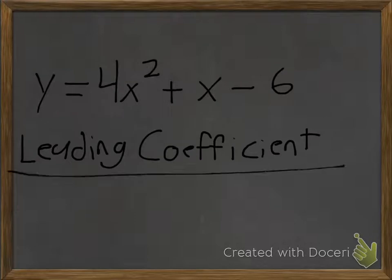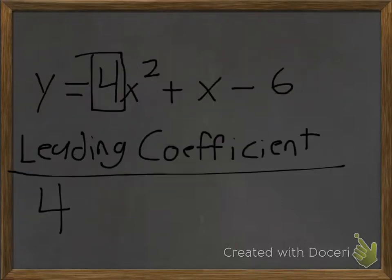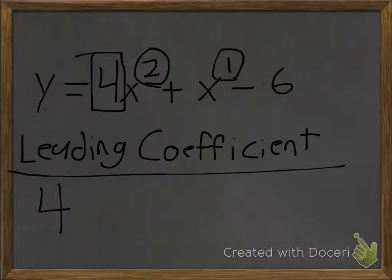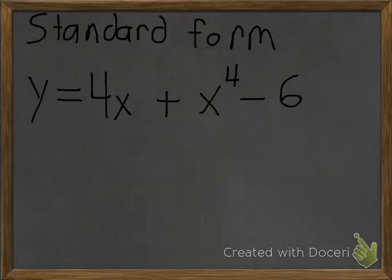A leading coefficient in a polynomial function is the number in front of a variable with the biggest exponent. In this case, it's going to be 4, because 2 is your biggest exponent. Remember, x is the same thing as x to the 1 power, and 2 is bigger than 1, and 4 is in front of x squared. So that is your leading coefficient — it's the number in front of the variable with the biggest exponent.